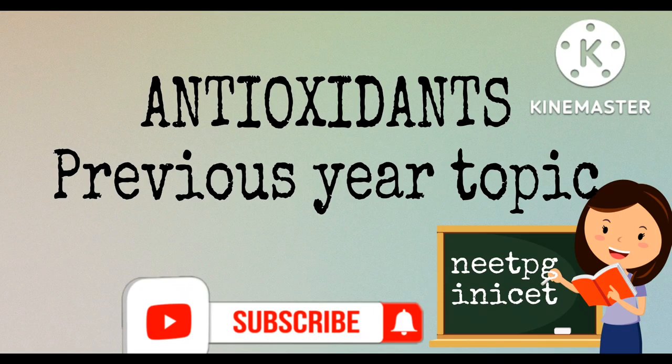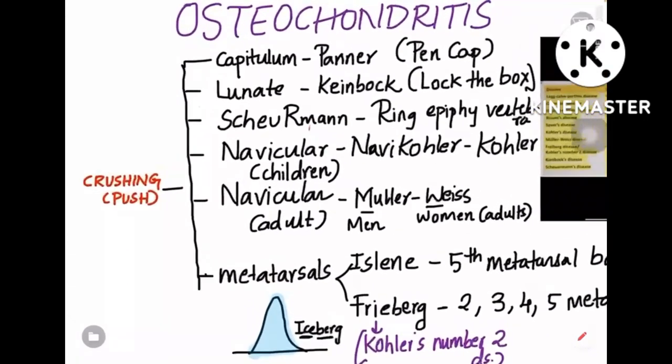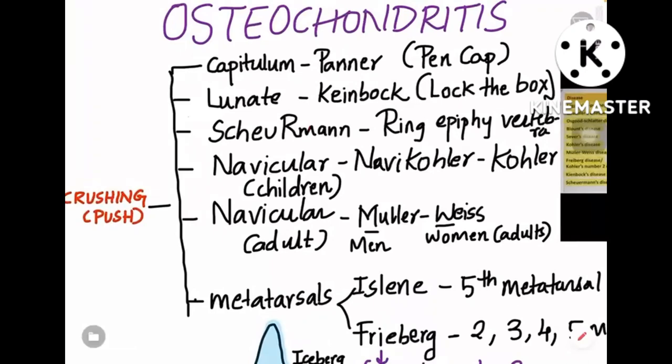Here's a short video on osteochondritis and the different names when different bones are involved. Osteochondritis occurs whenever there is a disruption of blood supply to the osteochondral part of the bone, causing ischemia leading to avascular necrosis of that bone.